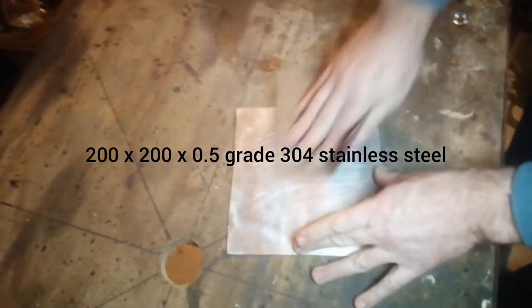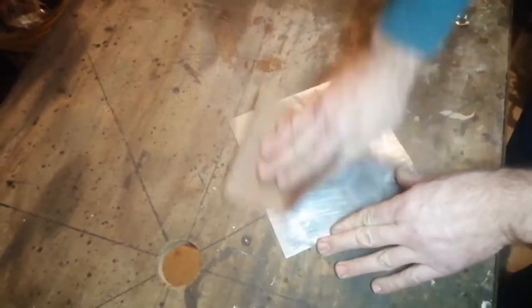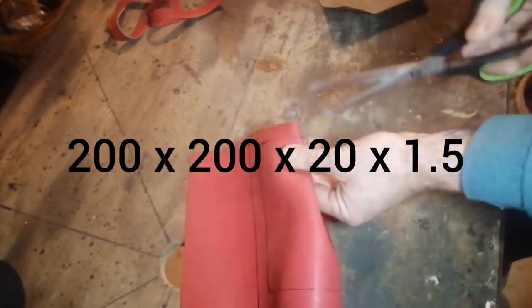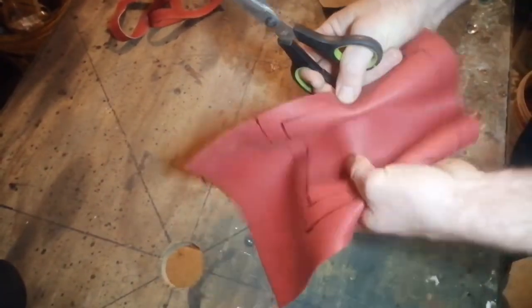I started out by sanding down some 200 by 200 by 0.5 304 grade stainless steel sheets. A rough surface increases the surface area, therefore increasing your hydrogen production.